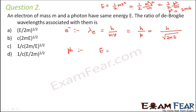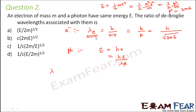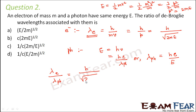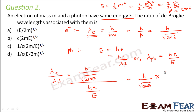For the photon, energy is h nu equals hc by lambda, so lambda photon equals hc by E. Therefore lambda electron by lambda photon equals h divided by root over 2mE, divided by hc by E. The h's cancel, giving 1 by c times root over E by 2m. The correct option is D.